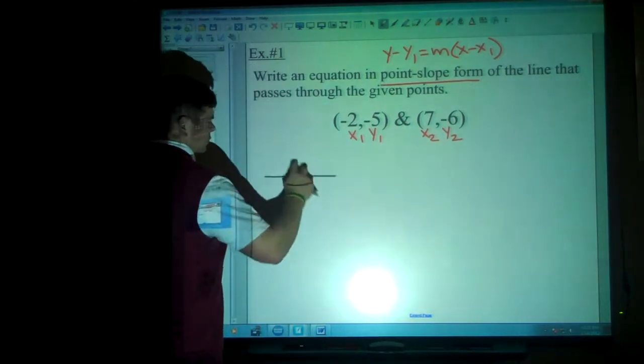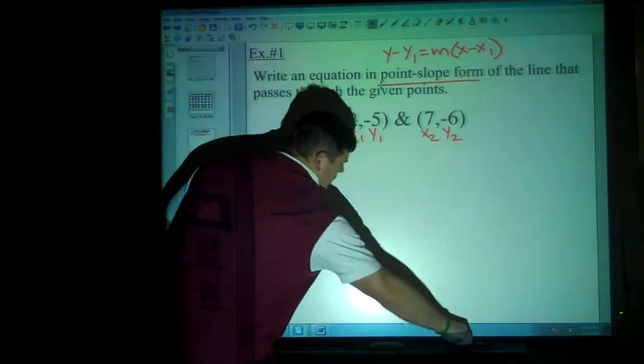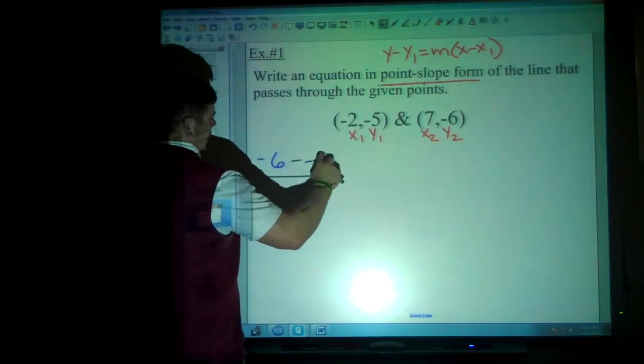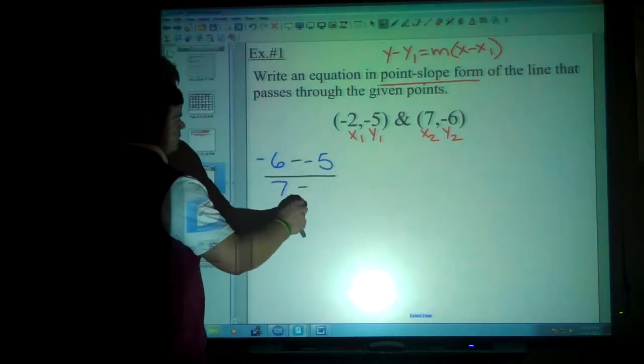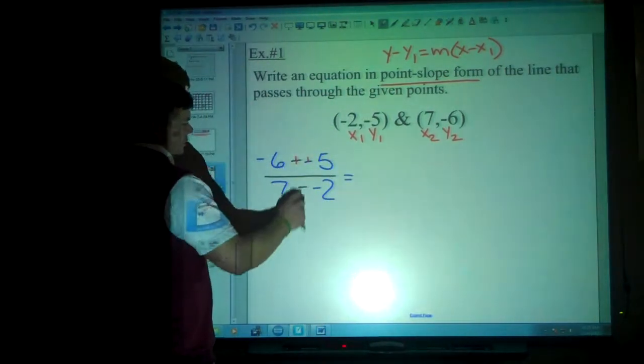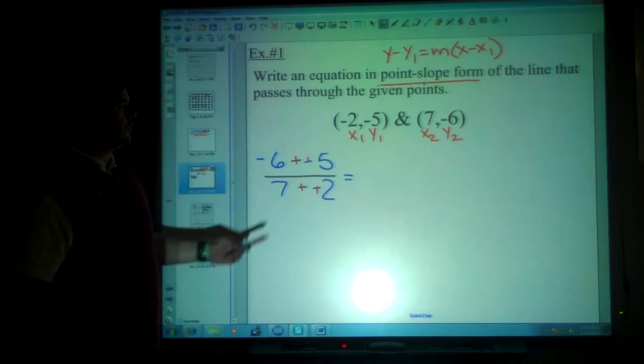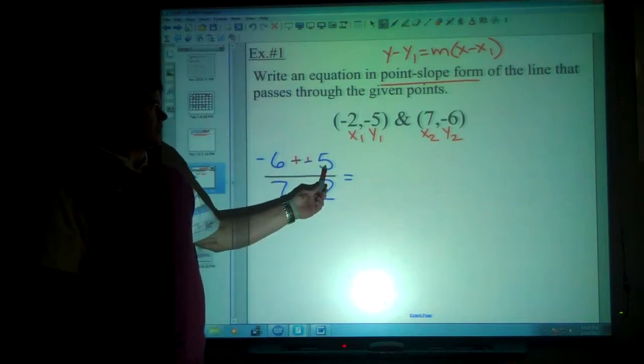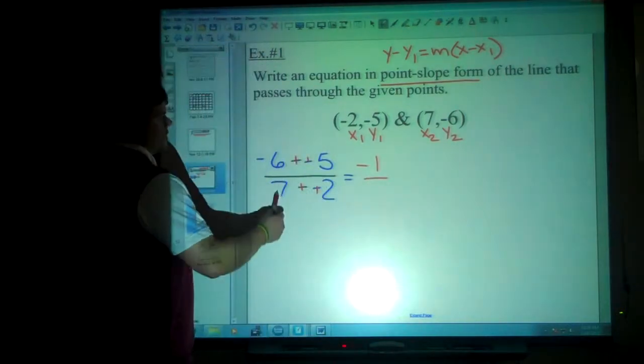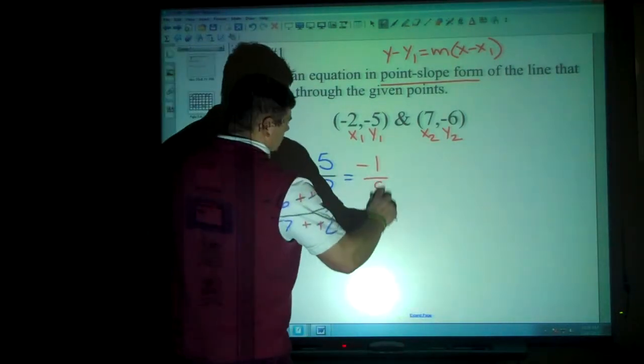So we draw a line, two subtraction signs. Then we say, it's negative 6 minus negative 5. We put 7 minus negative 2. We get our answer with our signs. We go plus positive, plus positive. Negative 6 plus a positive 5 is going to give us negative 1. On the bottom, 7 plus the 2 is 9.